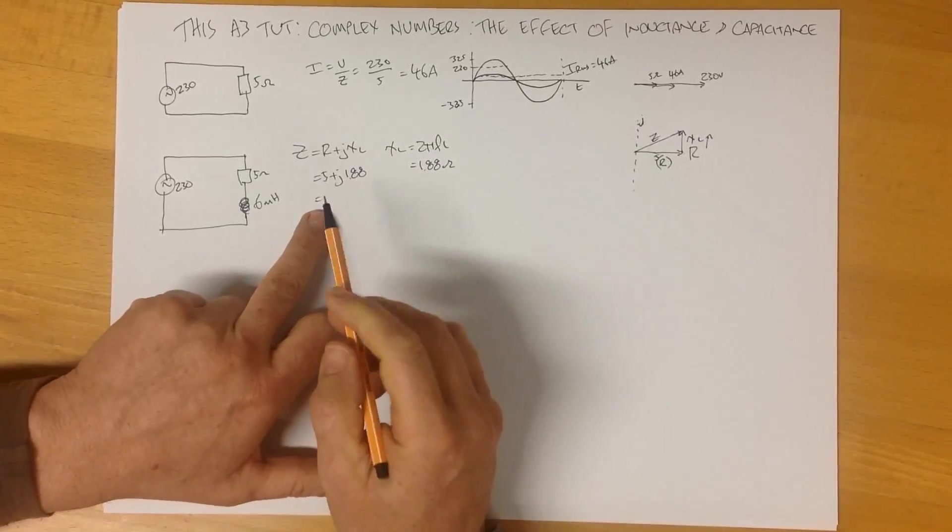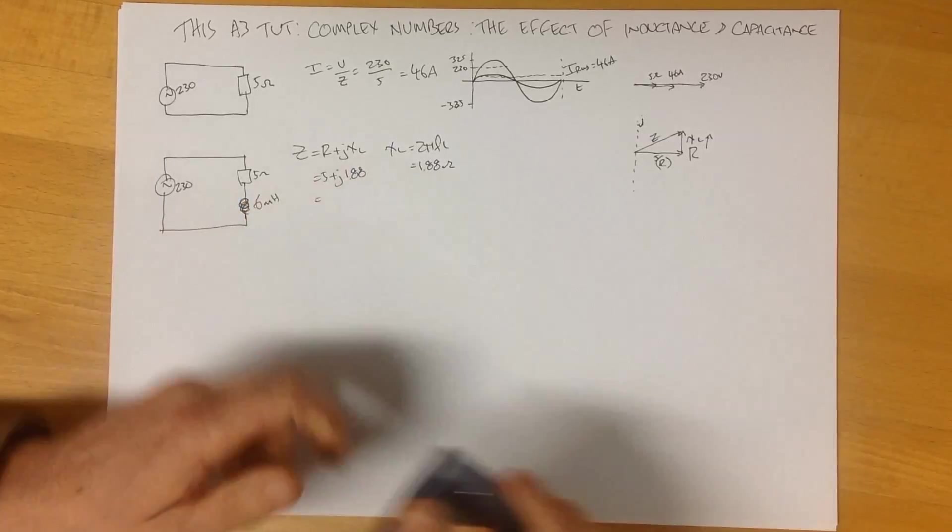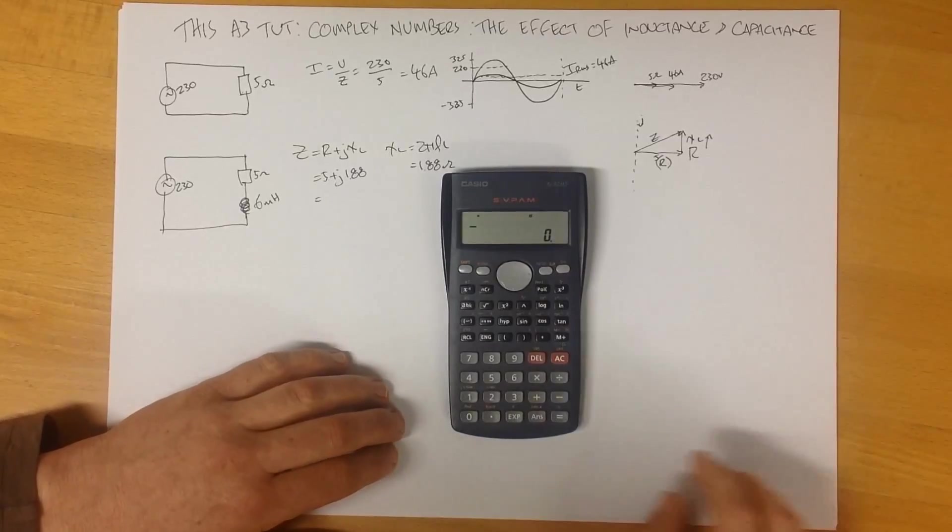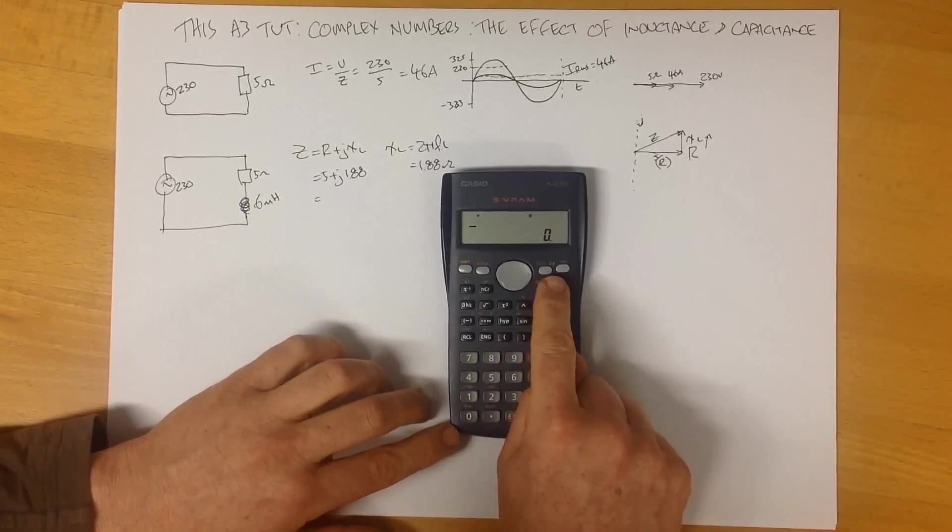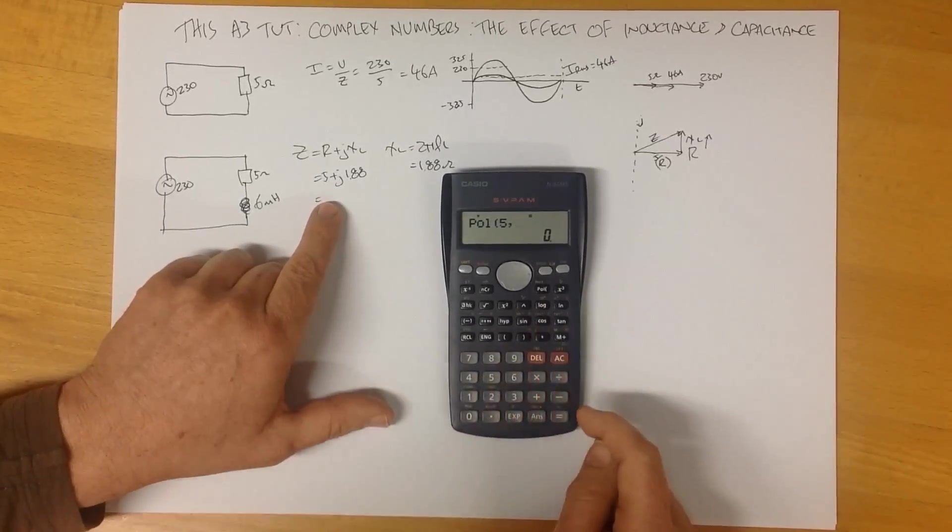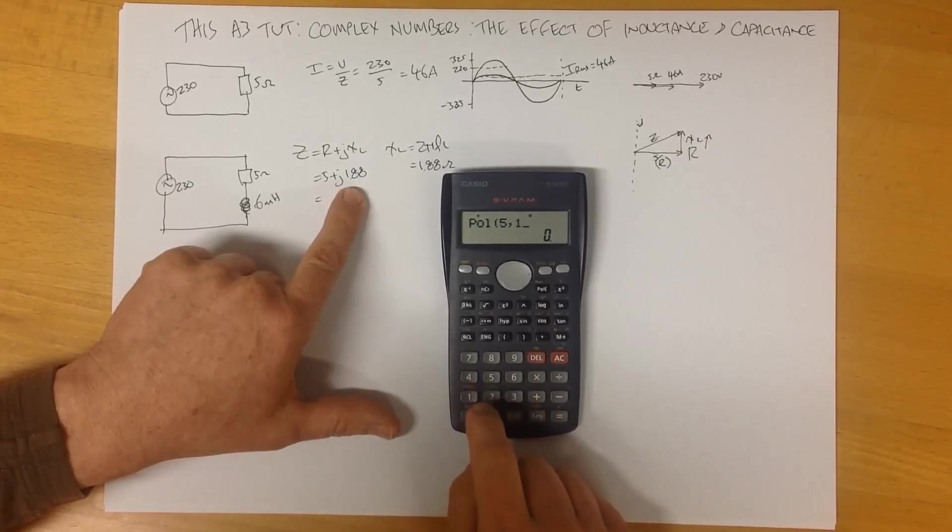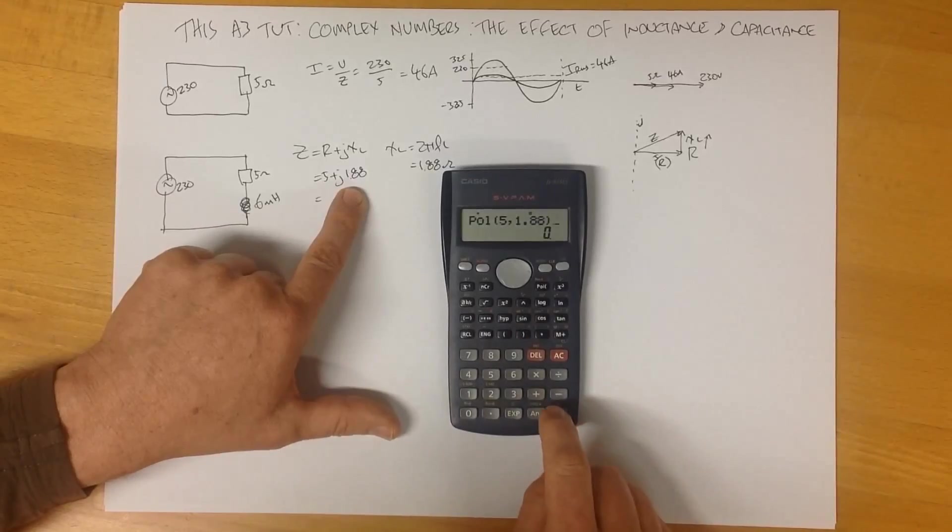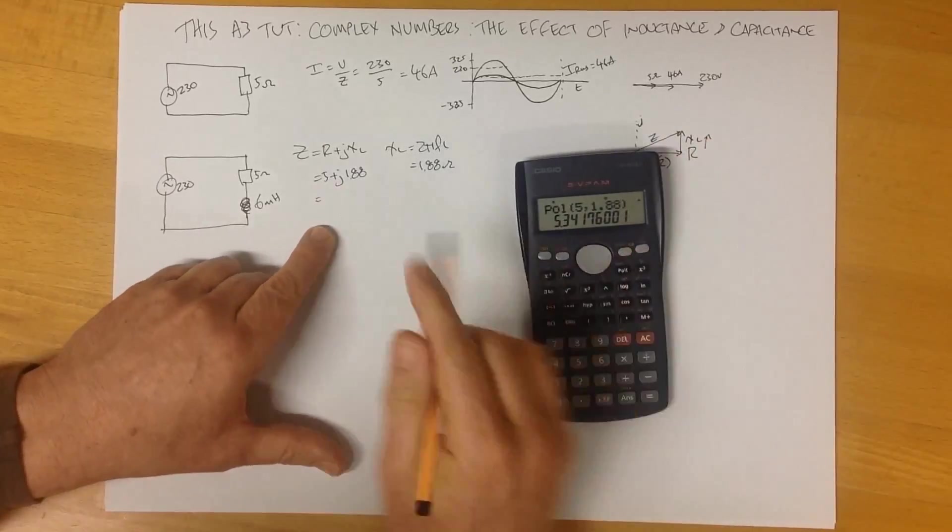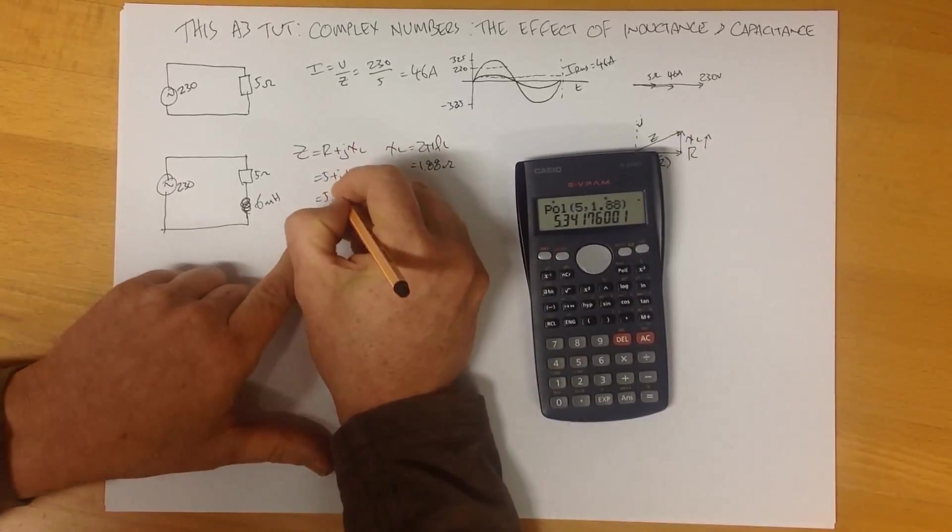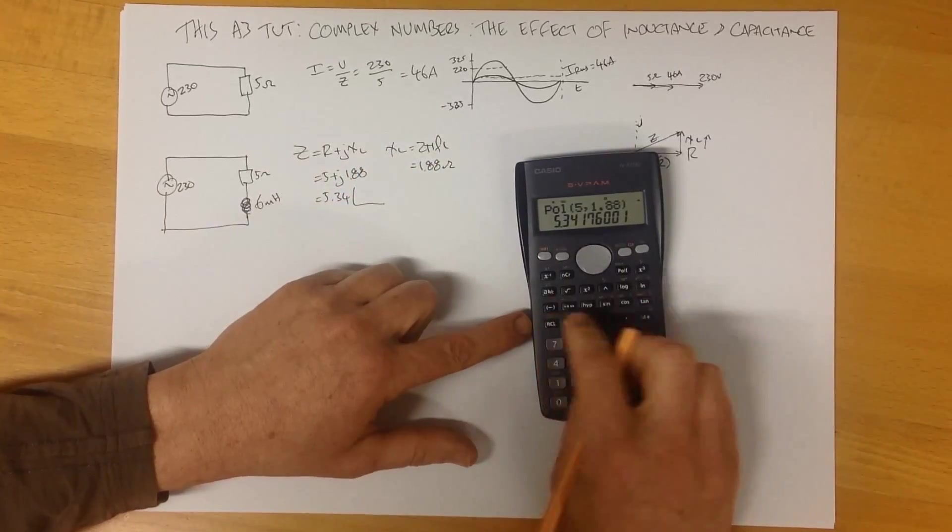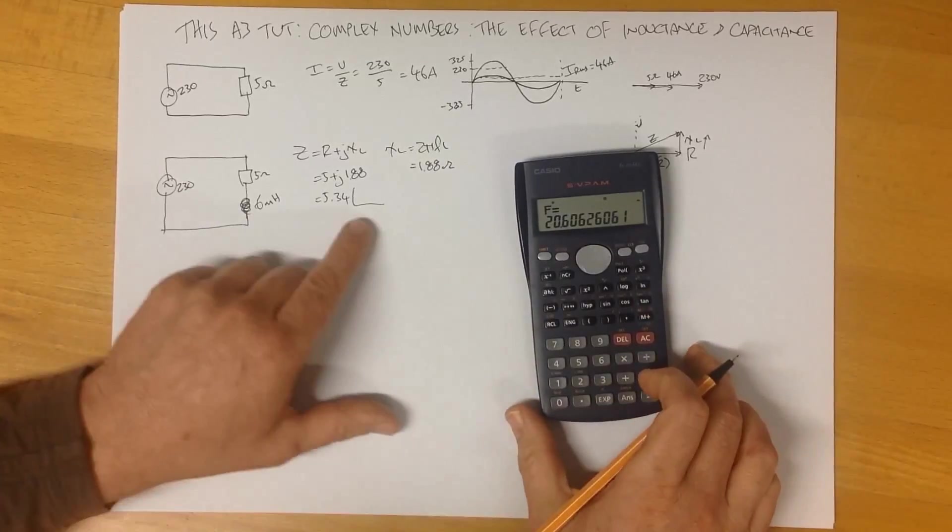If we do a rectangular to polar conversion on this, and for those of you who don't know how to do that with a calculator, here is a Casio calculator. It's very easy. We find the polar button, and we press it. We input the real component, which is 5 at the comma button. We input our reactive component, 1.88, close bracket, and equals. And that gives us the magnitude of our real component here, which in this case is 5.34. And we can get the angle, and we can get the angle by going recall the F button, and that will tell us our angle, 20 degrees.